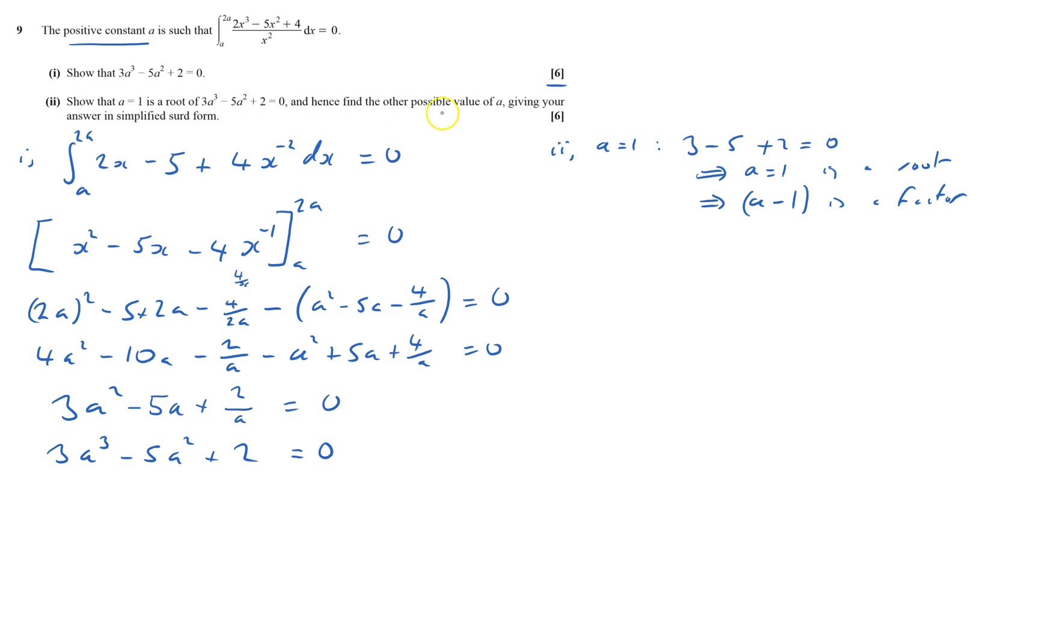Hence find the other possible value of a. That probably says that I'm not going to be able to factorize it. So I want to find the other thing, so I like doing it like this, in a sort of grid method, so I've got to find the other factors of this. So it's a cubic, so therefore I'm going to have to have this bit here, it needs to be 3a cubed, so I'm going to have 3a squared there. Unfortunately, that also gives me minus 3a squared, and I want to have minus 5a squared, so I need another minus 2a squared. To do that, I have to times the a by minus 2a.